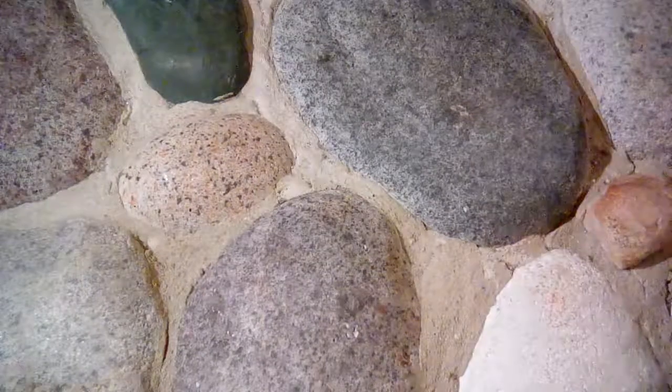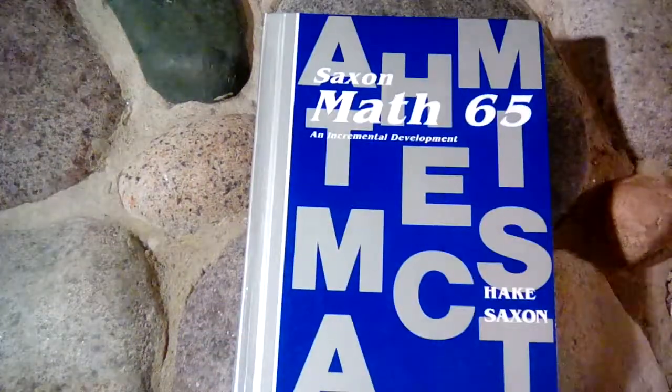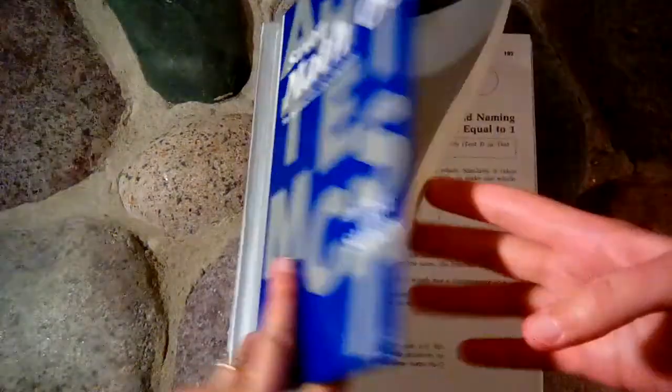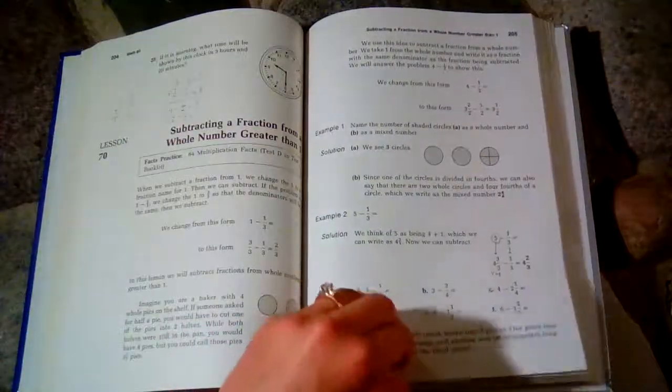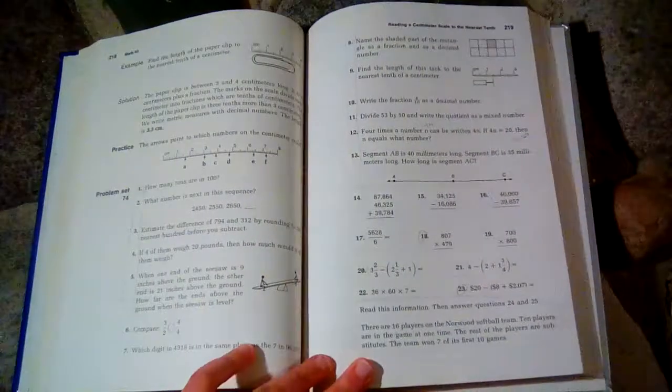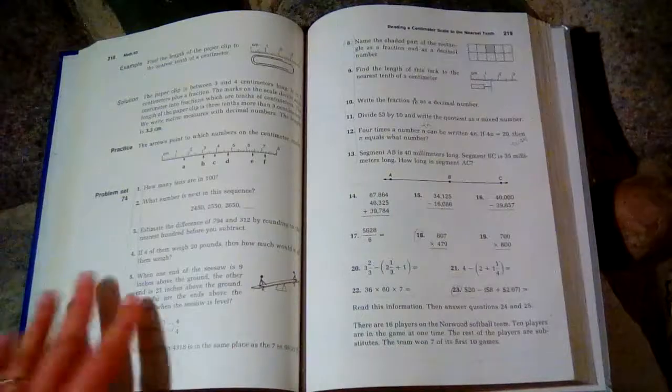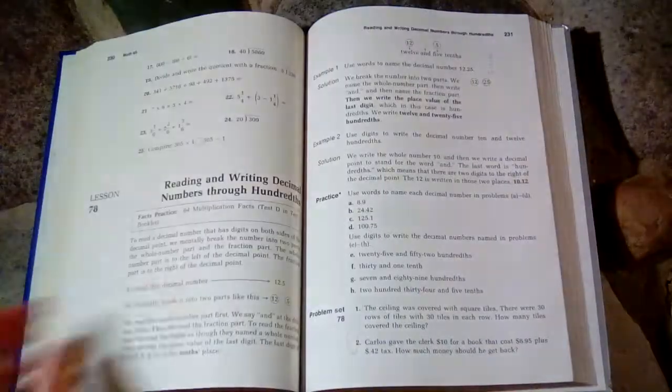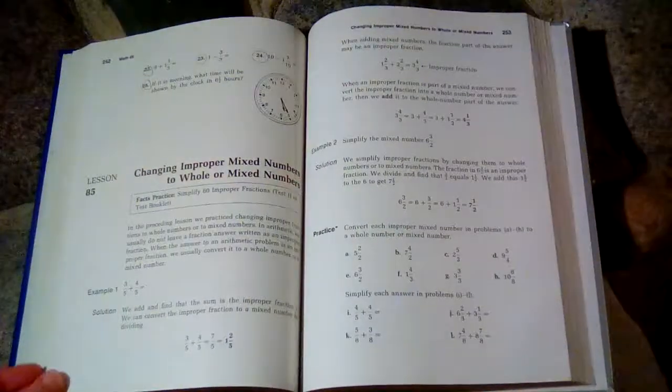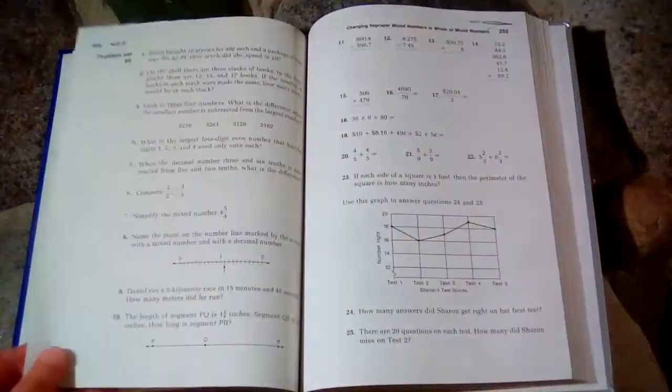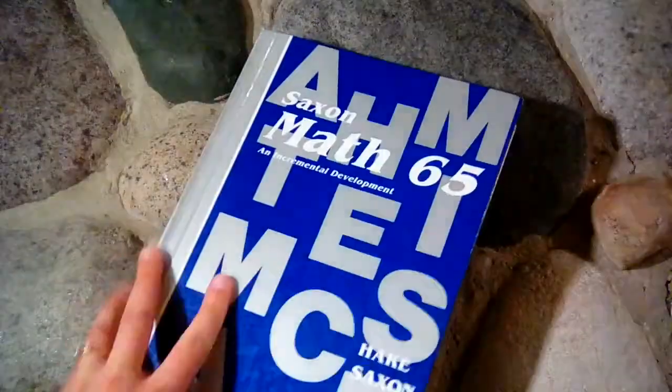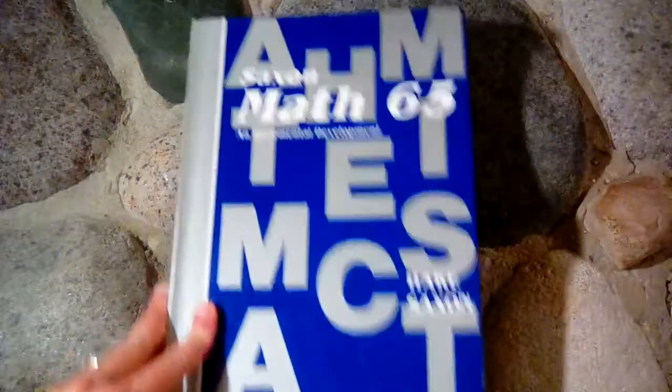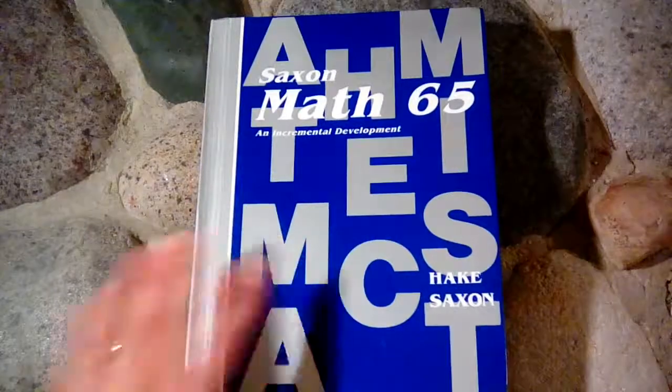That is Math 65. Saxon is very rigorous and definitely more rigorous than other math programs that I have seen. If that is what you're interested in, then Saxon will work well for you. It is spiral method; it continually repeats concepts and reviews concepts all throughout the book so that nothing is forgotten. I really like that, and I like how it's laid out. That is all I have for you guys about Saxon Math 65. I hope you enjoyed the video. Thank you for watching.